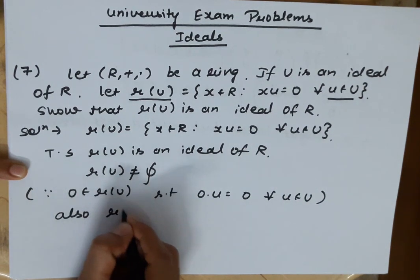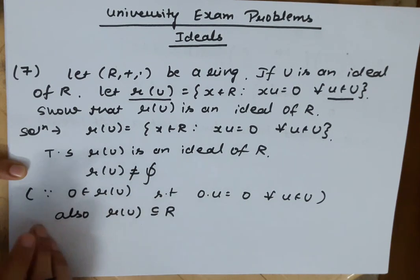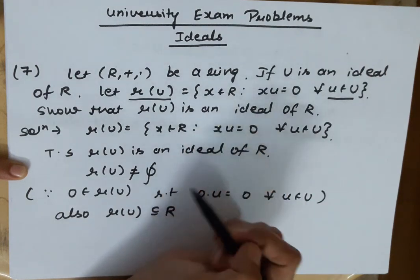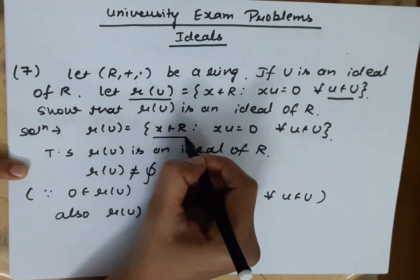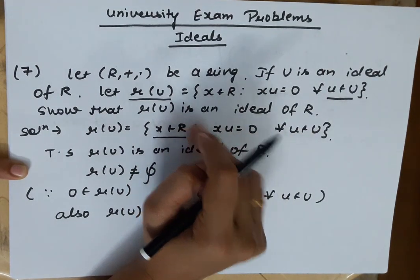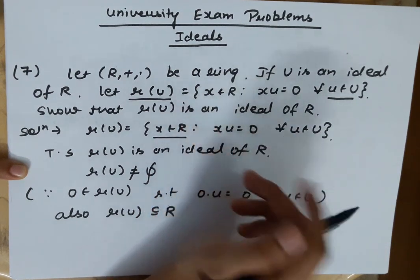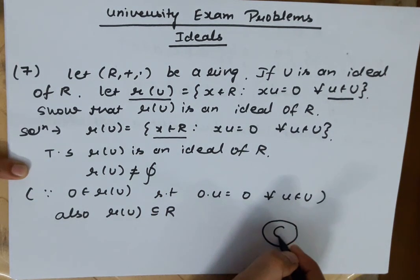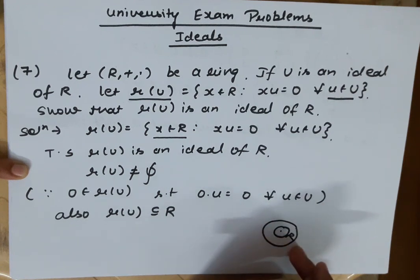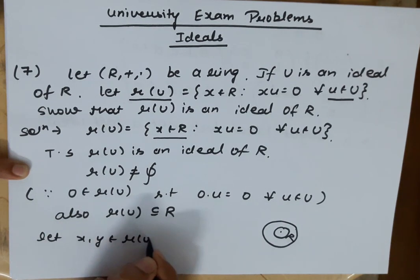Also, R(U) will contain R elements, since those are the definitions we know — all x belonging to R which satisfy this condition form R(U), and it is a non-empty subset of R. Now let's take elements: let x, y belong to R(U).